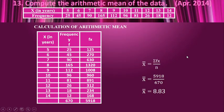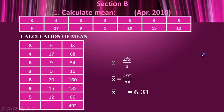Another discrete series question. x is given, frequency f is given, and fx is found by us. Total of fx is σfx, total of f is n. Going to the formula, x̄ = σfx / n. So x̄ = 5918 / 670. So x̄ is 8.83.